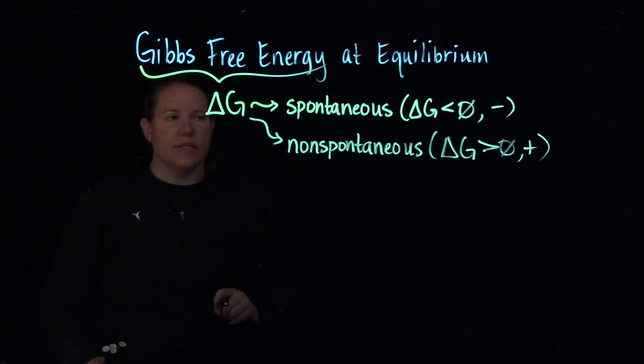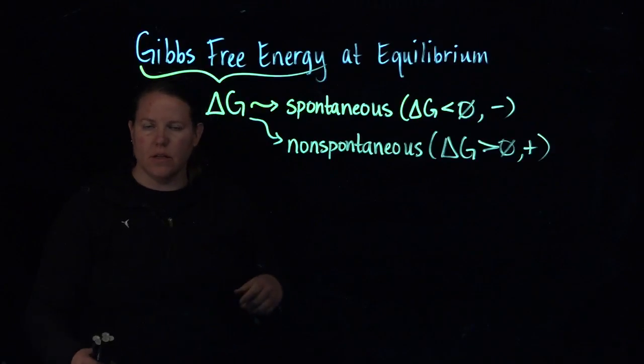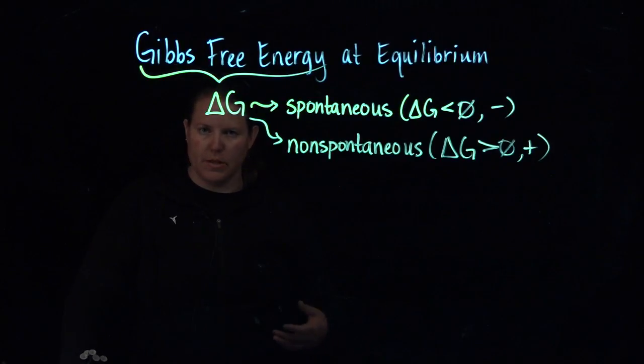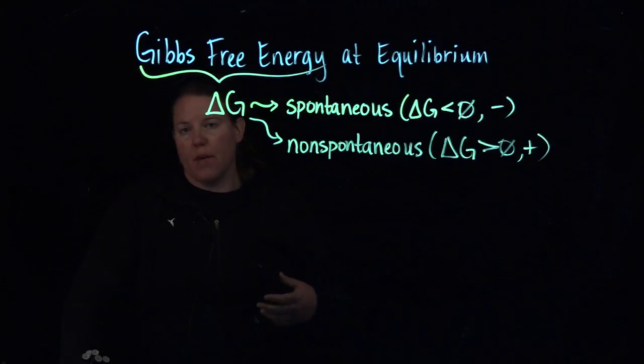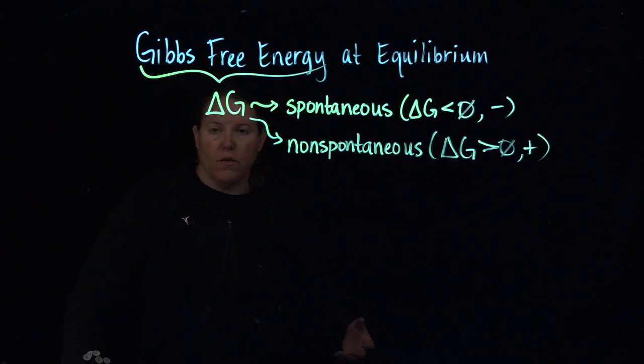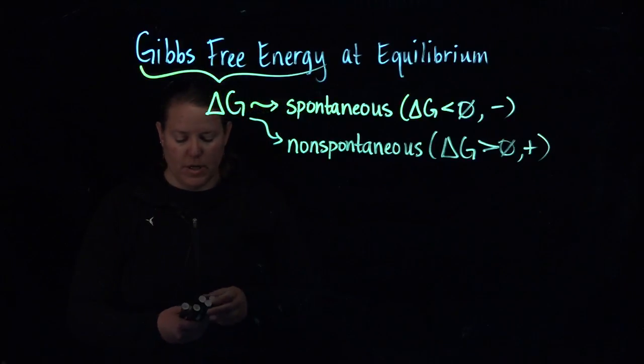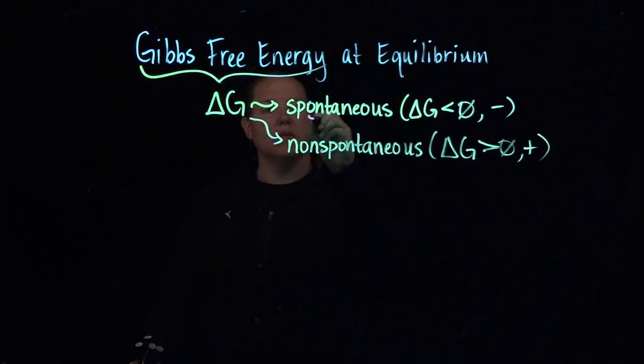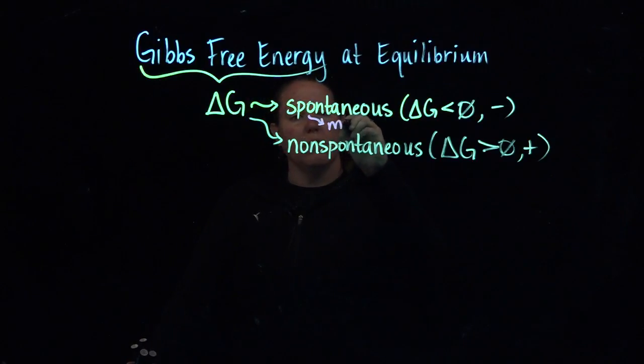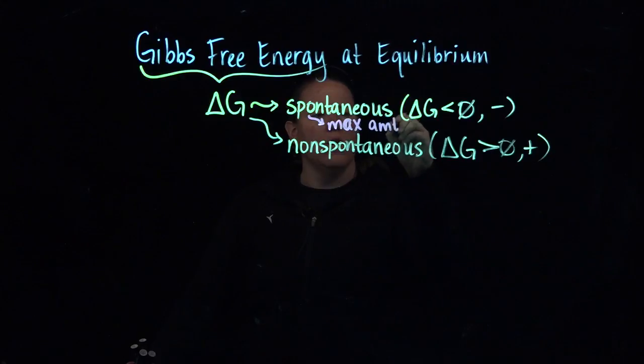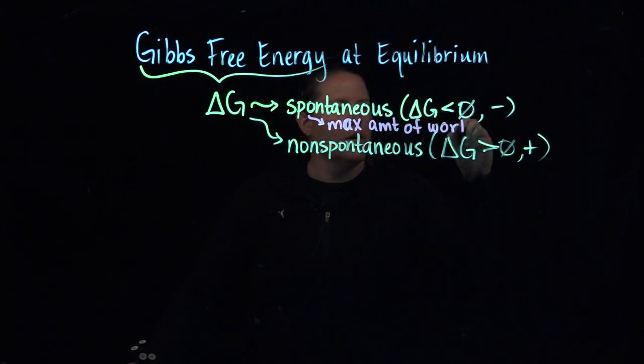Now what's interesting about this is really what we're talking about. What does spontaneity mean? It means given no outside influence, that reaction is going to happen. It may not happen immediately, it may not happen right when we want it to, but it's going to happen given enough time. When we talk about a spontaneous reaction, we relate that to work and we talk about work in terms of saying if a reaction is spontaneous, then that is the maximum amount of work the system can do.